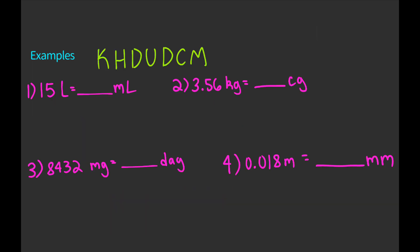These examples include the three probably most common metric units you're going to see: volume, mass, and distance. If we're working with volume, our unit is going to be liters. If we're working with mass, our unit is going to be grams. And if we're working in distance, our unit is going to be meters. Basically, your unit is the word without the prefix.